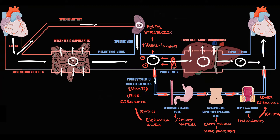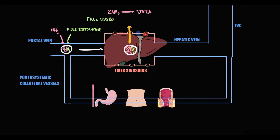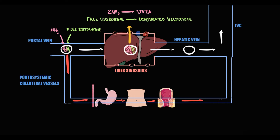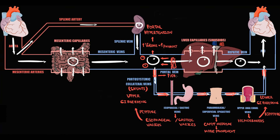Also, flow that bypasses the liver is non-physiologic. In our blood we have dangerous substances such as free ammonia and unconjugated bilirubin, and the organ that provides their detoxification is the liver. In normal conditions, the portal vein delivers blood to the liver, where the liver converts dangerous ammonia into urea, a less harmful substance, and also conjugates bilirubin. But blood that flows into the shunts bypasses the liver and does not undergo detoxification. As a result, this can cause an increase in blood ammonia level leading to hepatic encephalopathy, and an increase in free bilirubin level manifesting as jaundice.